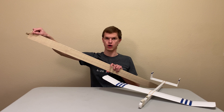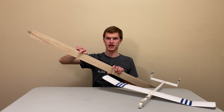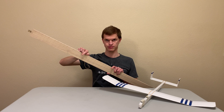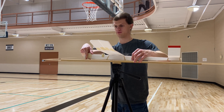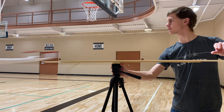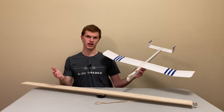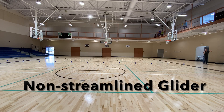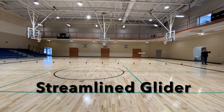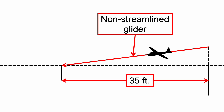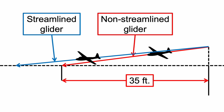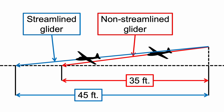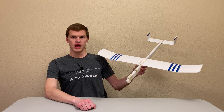To ensure a fair comparison, a launch ramp is used so each plane is launched at the ideal speed and angle for maximum flight distance. The planes are launched by a rubber band attached to a pulley — pulling it back further makes the planes fly faster. After several test flights adjusting center of gravity and launch speed, the maximum distance achieved with the non-streamlined glider was 35 feet, while the streamlined glider achieved 45 feet — almost 30% further — demonstrating how streamlining reduces drag and increases flight distance.